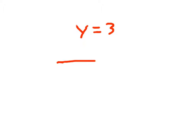Our first step would be to create a function table. For any given value of x, say x equals 0, you'll notice that there's no x variable in the equation y equals 3. So there's no place to substitute the value of 0 in — it just says y equals 3.